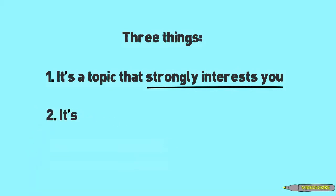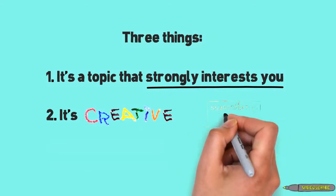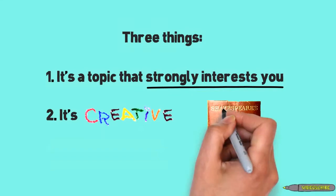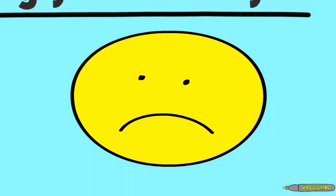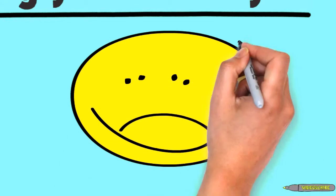Second, make sure your topic is creative. What do we mean by that? Well, there are some topics that have just been written about over and over again. Can you come up with a topic that perhaps hasn't been covered that much? Try to pick something that is creative and exciting to you and your peers. Writing about Shakespeare's dramas is great, but that topic in itself has been covered extensively.